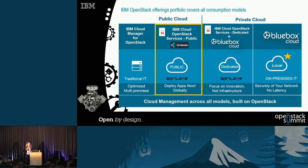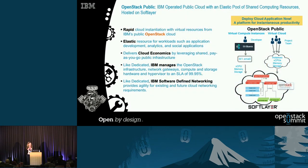Why public cloud? Because it's a cost-effective and reliable way of delivering value to organizations both big and small, across geographies and virtually every industry. Our OpenStack public cloud allows for rapid cloud instantiation with virtual resources. We have elastic resources for workloads such as application development, analytics, and social applications. We deliver cloud economics by leveraging the shared pay-as-you-go public infrastructure. IBM manages the OpenStack infrastructure, network gateways, compute and storage hardware, and hypervisors to an SLA of 99.95%.